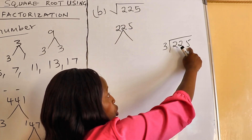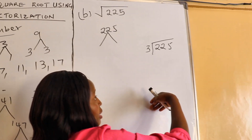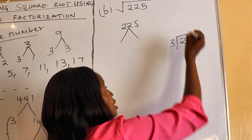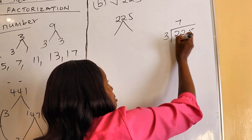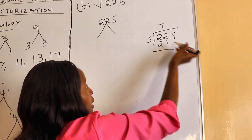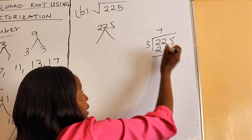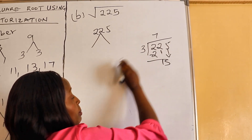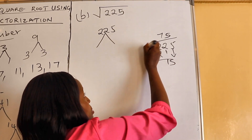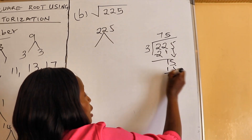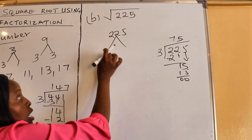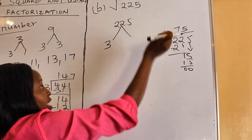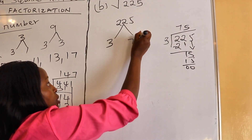Since 225 is not divisible by two, we go to three. We check and it goes: 7 remainder — 15 divided by 3 is 5, because five times three is 15. On our branch, we write the divisor three on the left and the quotient 75 on the right.